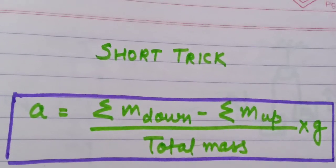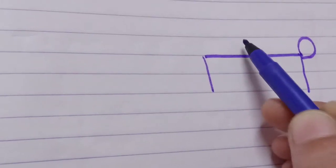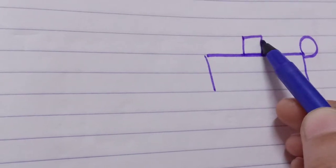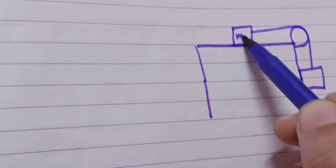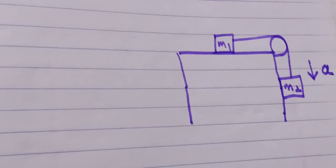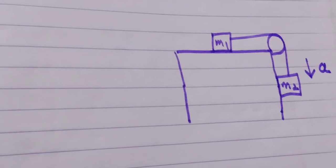The first condition is this horizontal surface. There is a pulley, with masses m1 and m2. Acceleration is downward. So now I'll tell you how we can apply the short trick in this condition, then explain the whole procedure.